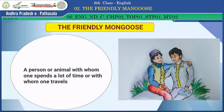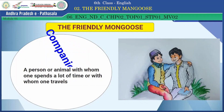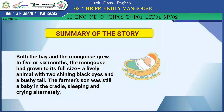Companion. The meaning of the word companion is a person or animal with whom one spends a lot of time or with whom one travels. Now, getting into the summary again. Both the baby and the mongoose grew in five or six months. The mongoose had grown to its full size — a lively animal with two shining black eyes and a bushy tail. The farmer's son was still a baby in the cradle, sleeping and crying alternatively.